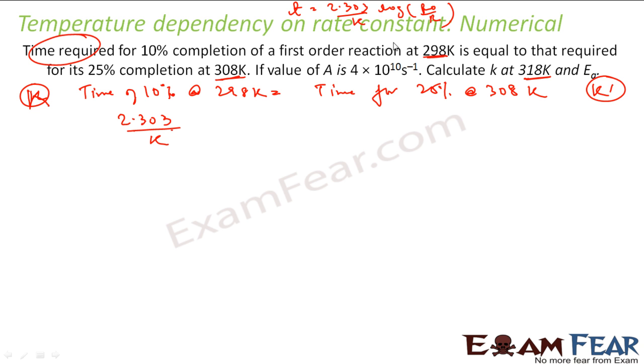Time required for 10% completion at 298K is T = 2.303 by K log of R naught by R. This is the universal formula we know. First case T will be 2.303, here let's suppose rate constant is K, by K into log of R naught by R.